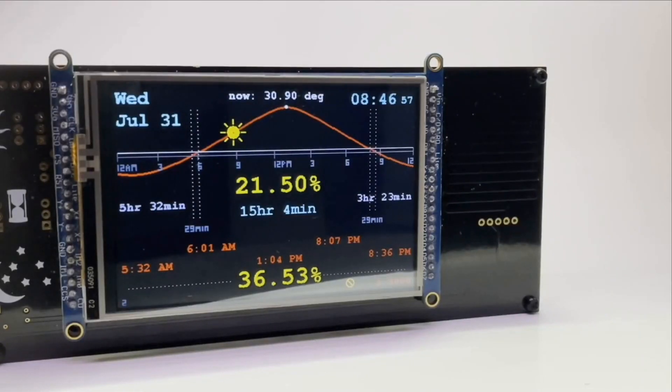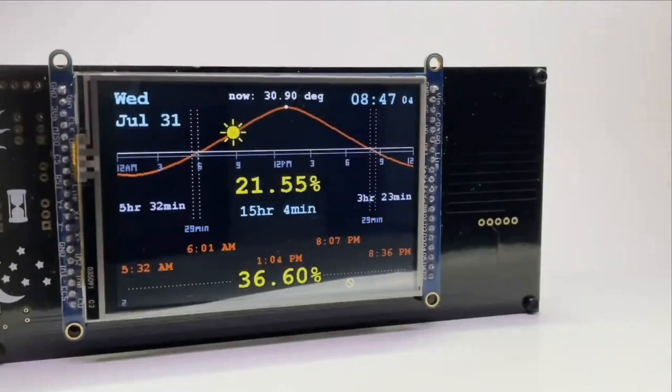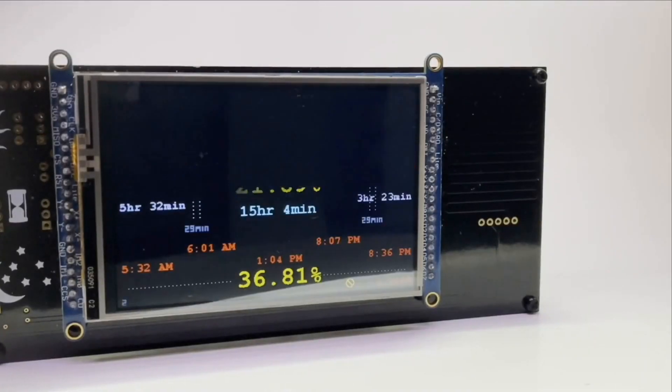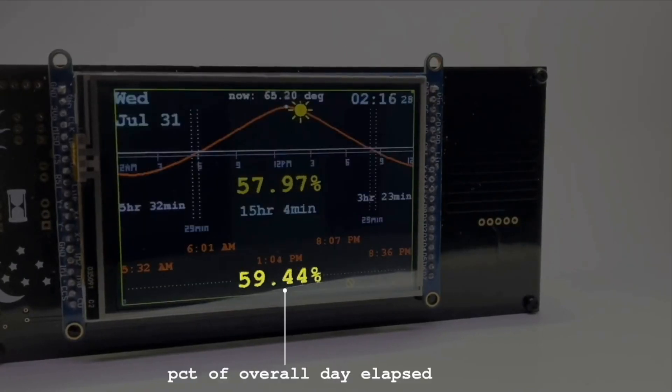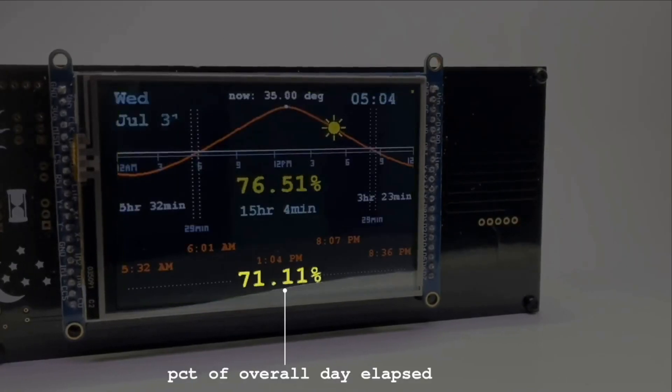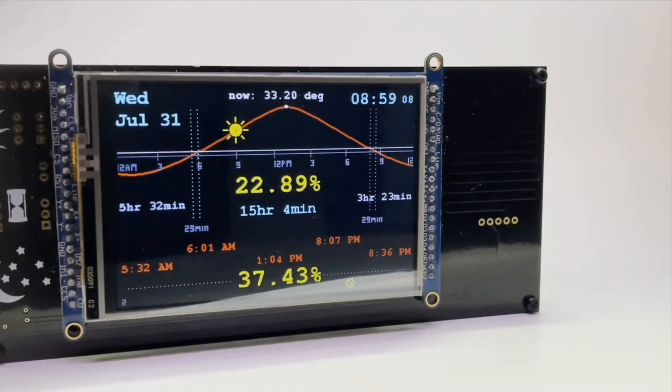So today everyone living at the same latitude as me will receive 15 hours and 36 minutes of daylight including the times of both dawn and dusk. The percentage right above it shows me how much of the 15 hours and 36 minutes of daylight has already gone by and the percentage at the bottom shows me how much of the total day has gone by.